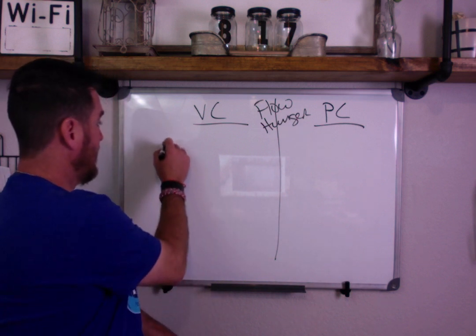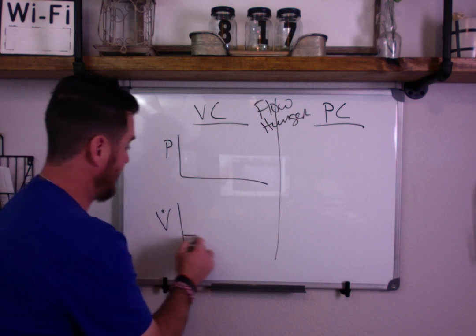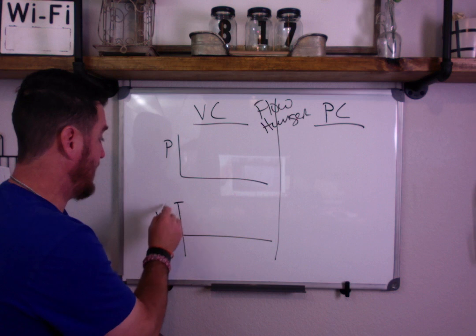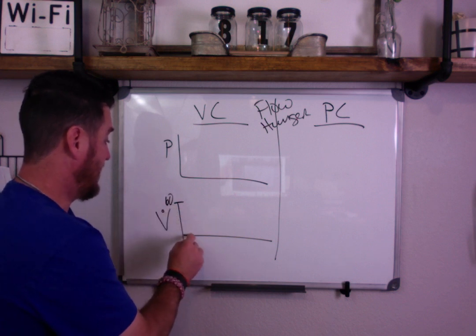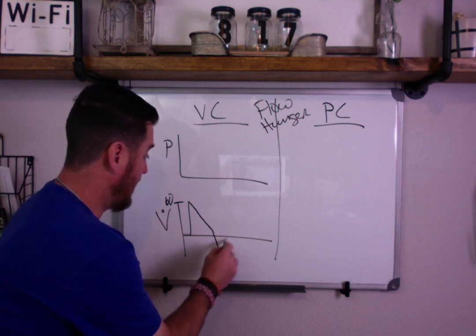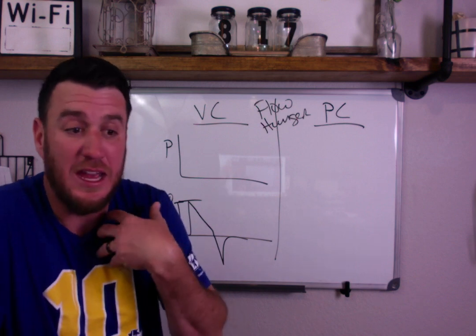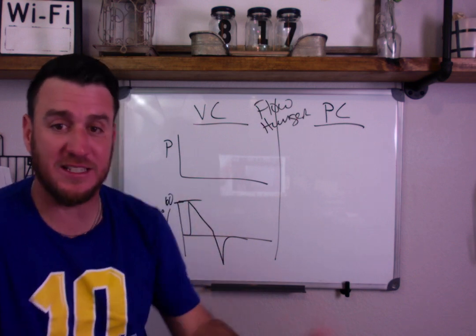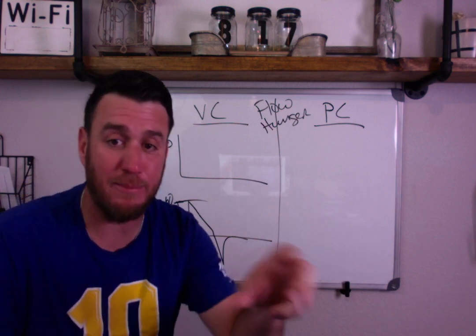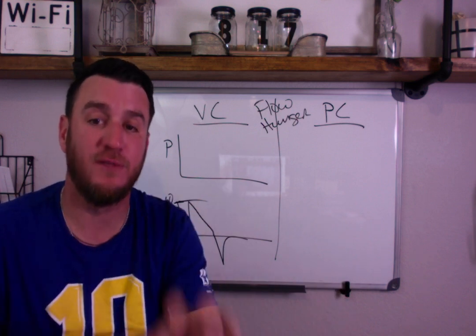We're going to have a pressure waveform and a flow waveform. In volume control, our flow is set. So if you have a flow of 60 set, then when the breath is given, that flow is delivered at 60 — nothing can change that. If the patient is breathing in at 70 liters per minute, it doesn't matter. The vent says, I'm supposed to give you 60. So the vent doesn't adapt to the patient's inspiratory flow. It gives what is set — that is volume control.